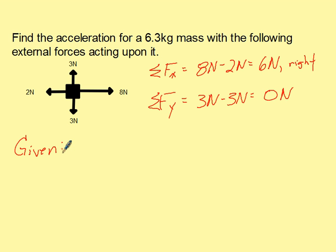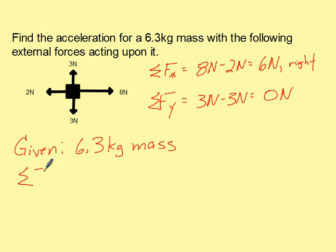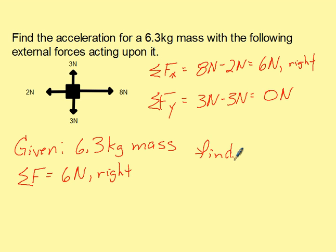Looking at our givens, we were told that we have a 6.3 kilogram mass. Now that we know our total sum of forces equals 6 newtons to the right, what is it we need to find? This problem wants us to find the acceleration, so at this point it's a pretty simple problem to solve.